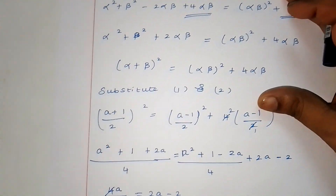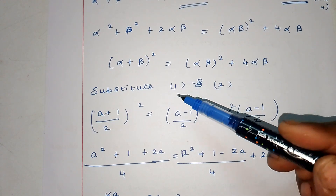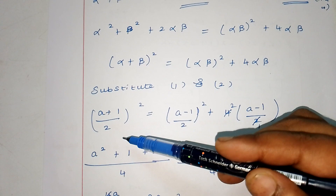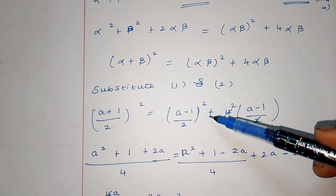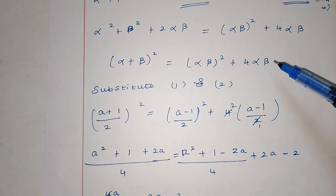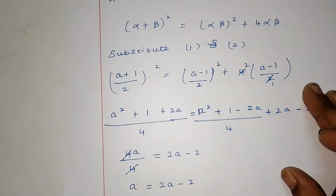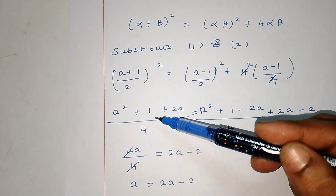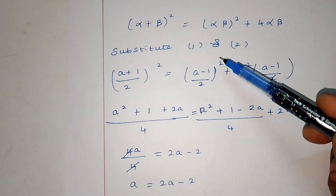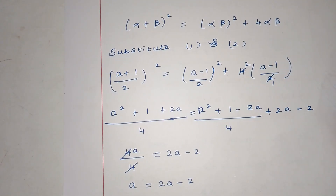Now substitute equations 1 and 2. Alpha plus beta value (a+1)/2, squared, equals alpha into beta value (a-1)/2, squared, plus 4 into (a-1)/2. Expanding: (a+1)²/4 equals (a-1)²/4 plus 2(a-1).